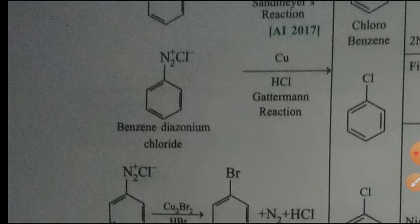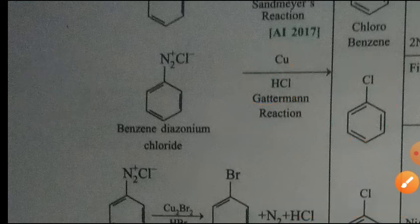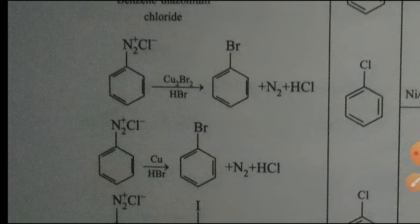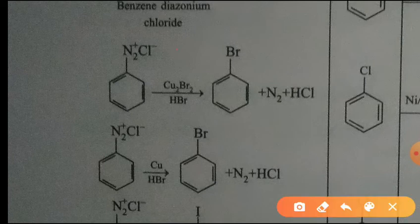The third method is when you have benzene diazonium chloride and react with copper in place of HCl — this is the Gattermann reaction — and again we get chlorobenzene. If you require bromobenzene instead, you react with CuBr₂ and HBr with CuBr to get bromobenzene. The first one is the Sandmeyer reaction and the second is the Gattermann reaction.